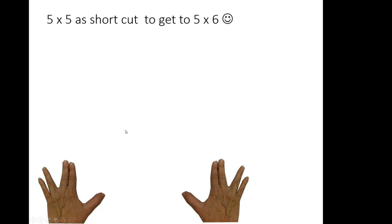We can use five times five as a shortcut to get to five times six. We say twenty-five, and then jump to five times six is thirty. Or five times two times three, ten times three, half of six times ten.